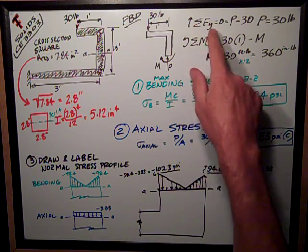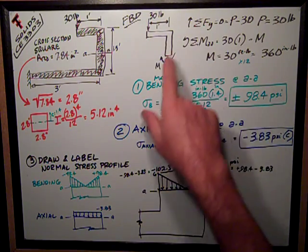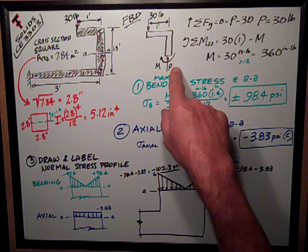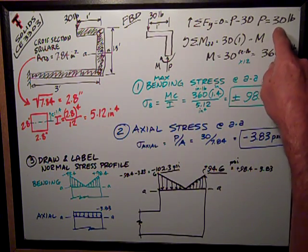So the sum of forces in the y direction, up is positive, is zero, so I have P, the reaction at AA, minus 30 pounds, so P is equal to 30 pounds.